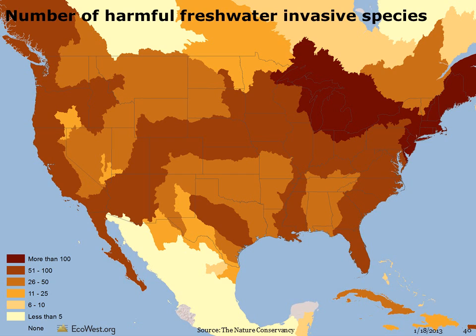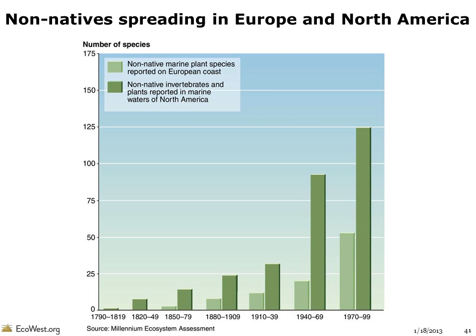Virtually all of the country also has at least some harmful invasive species, with the greatest number found around the Great Lakes and Northeast. Invasive species are an especially big problem in Europe and the United States, and the number of invaders reported on the European coast and in marine waters of North America has been steadily increasing.